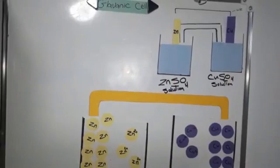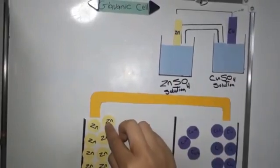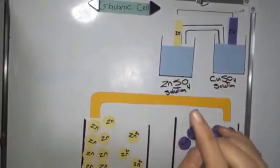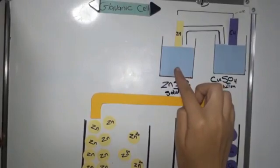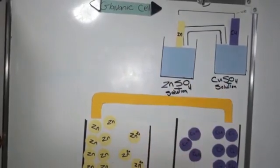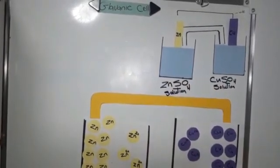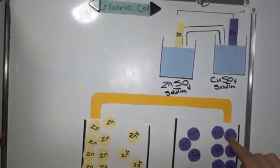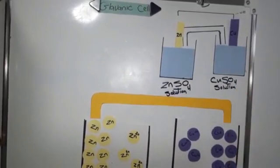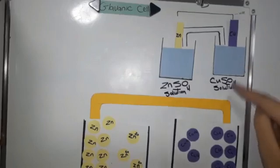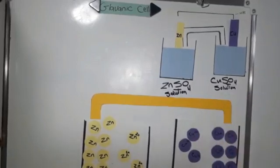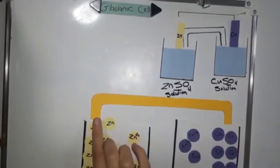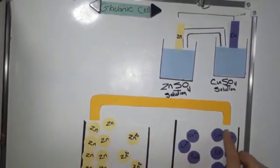And now, to focus on the part of galvanic cells. We have neutral atom of zinc that form zinc metal. And in zinc sulfate solution, we have zinc ion. And on the other side, we have copper metal, neutral copper that form copper metal. And in copper sulfate, we have copper ion. And we have a wire that connects between zinc metal and copper metal.